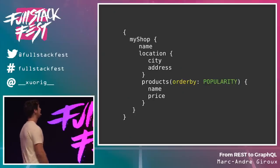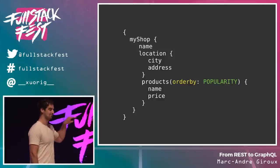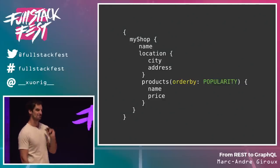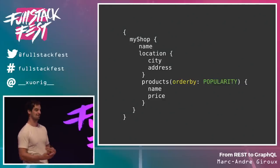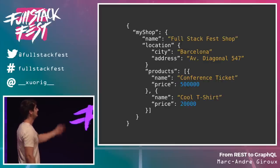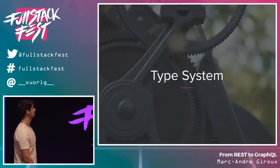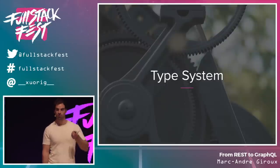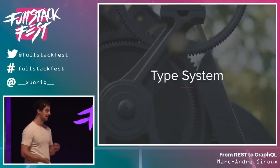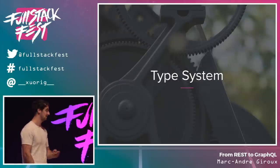Let's take a more complex example. We don't only fetch the name of the shop — we can fetch complex objects and associations on that shop. So I have the location, where I only want city and address, a list of products with the name and price of each, and an order-by argument which is an enum. The response is just the query with values — that's all possible because at the core of GraphQL is a really powerful type system.